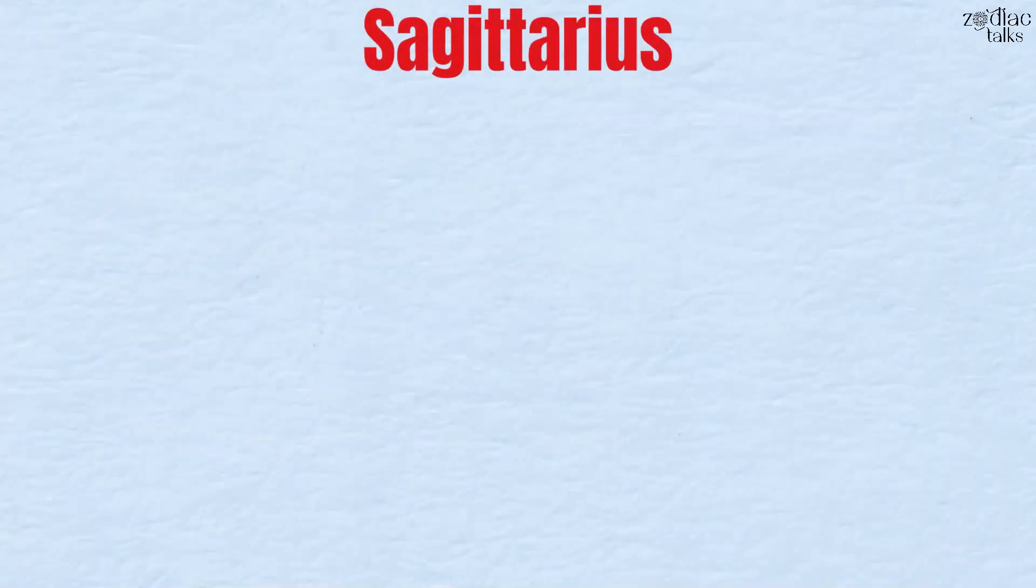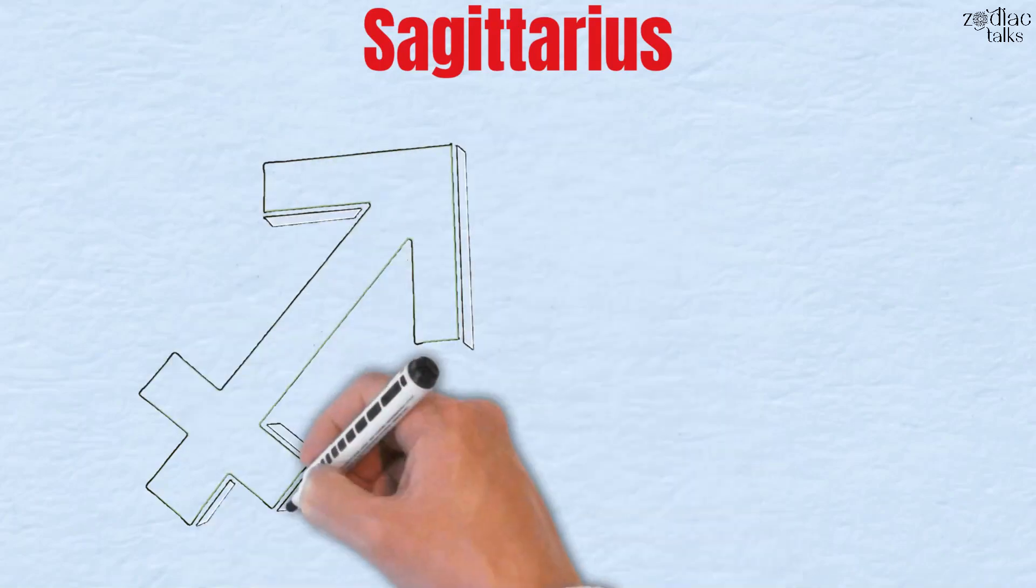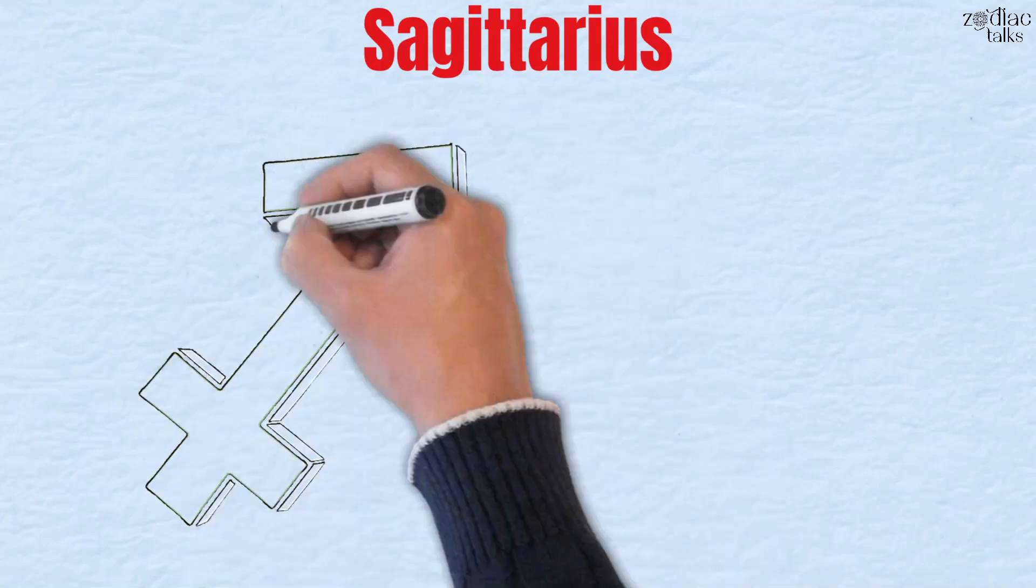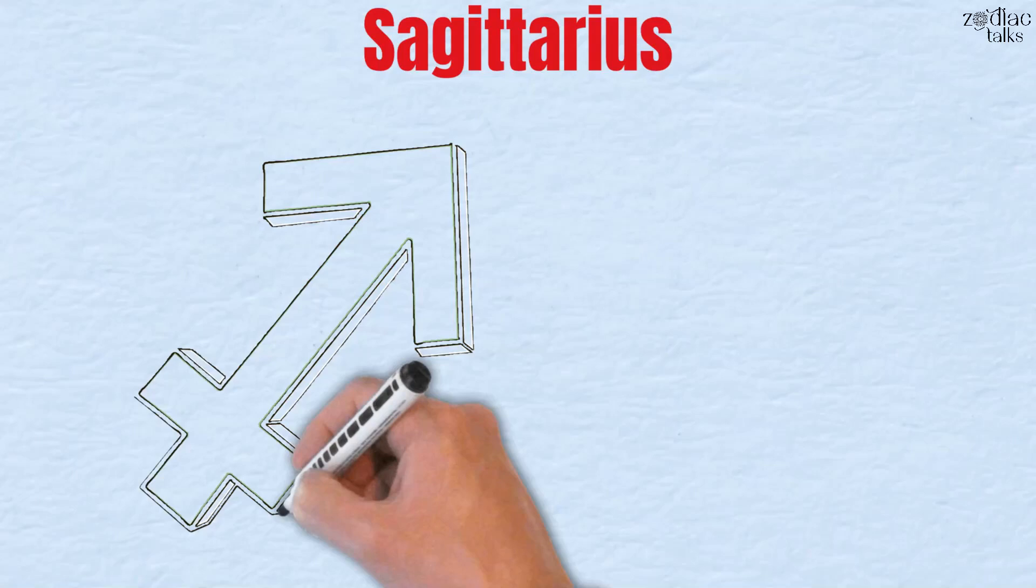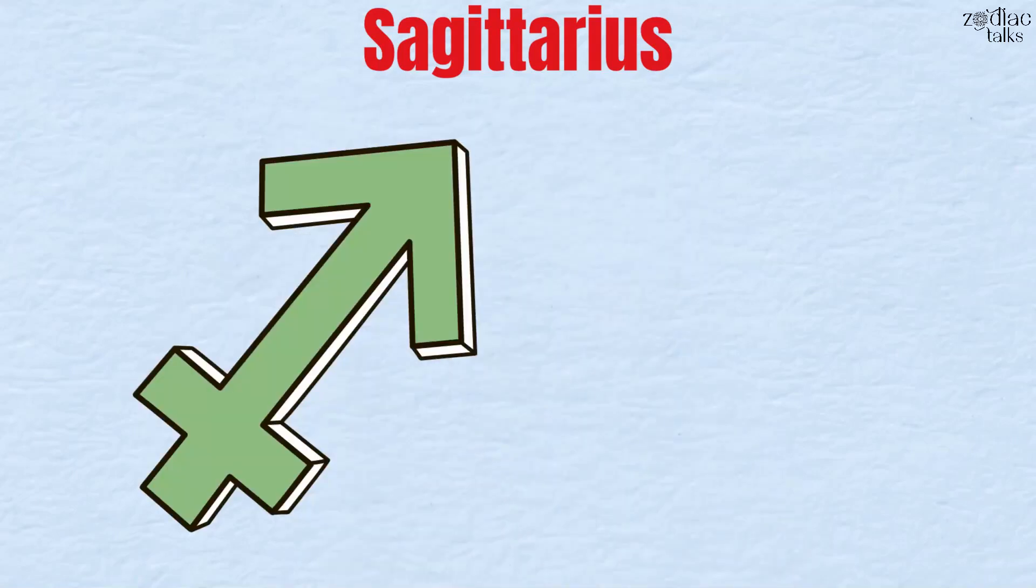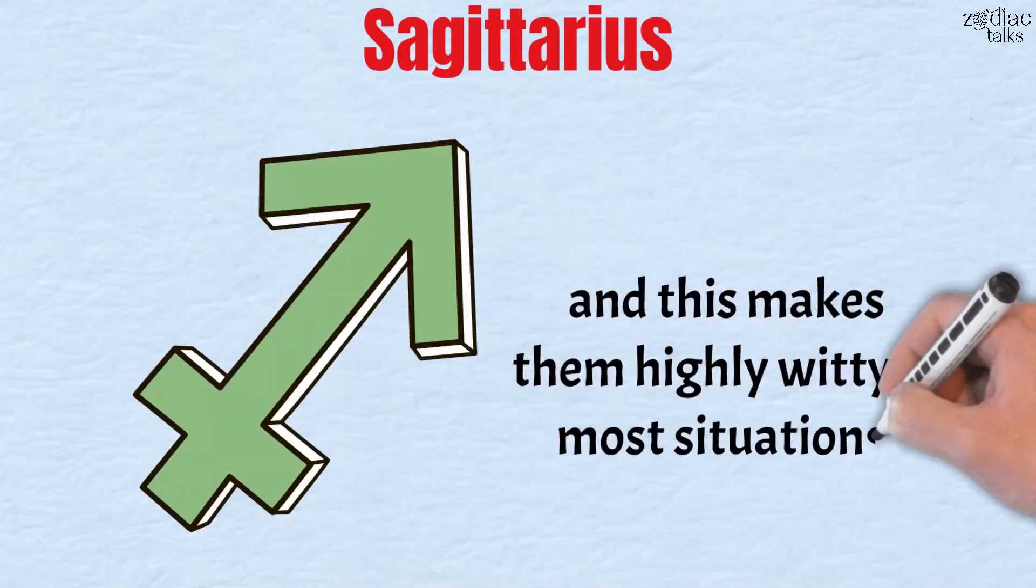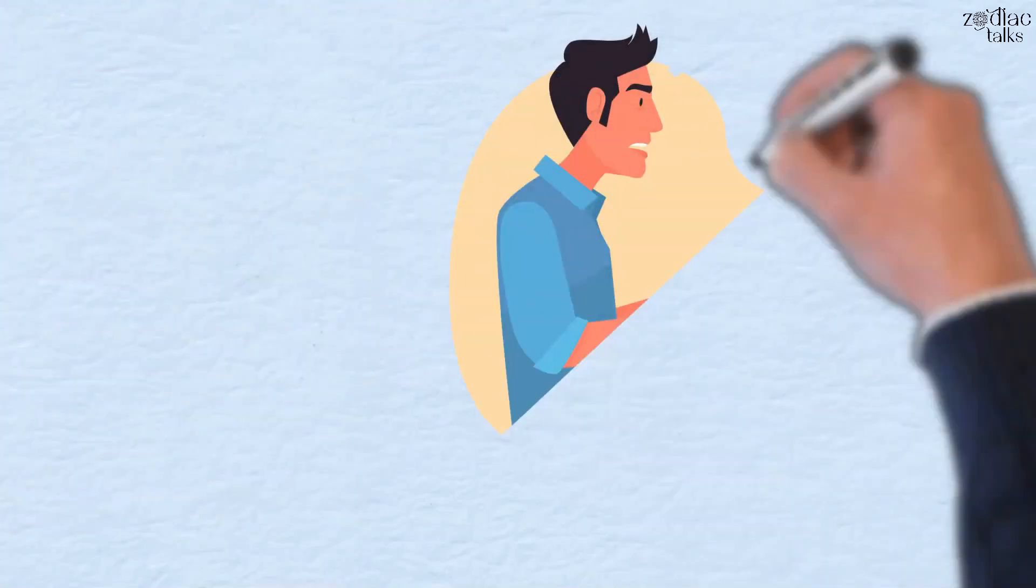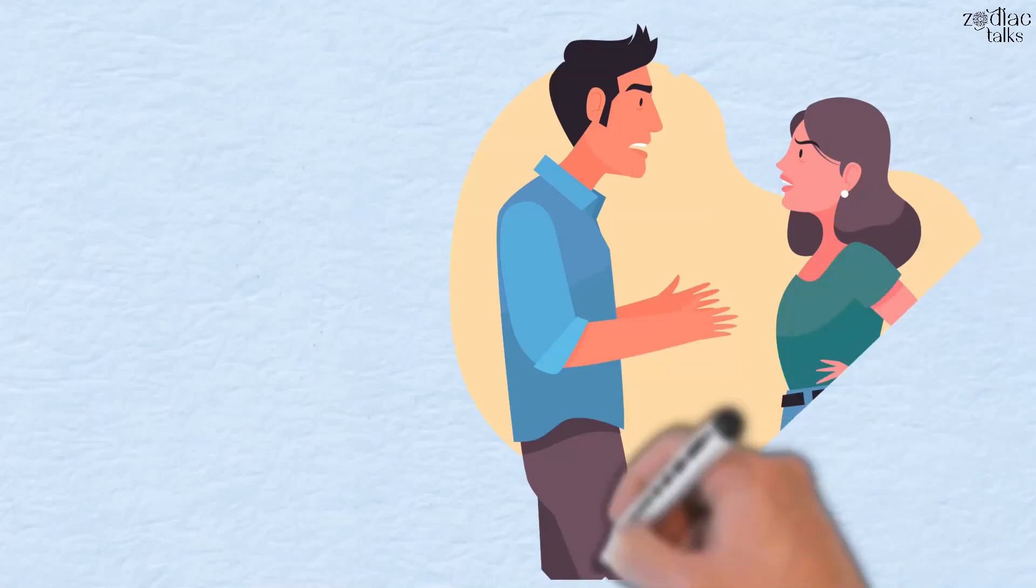Number three, Sagittarius. Another one of the dry humor signs, the Sagittarius native says things the way they are. They're not people to beat around the bush, and this makes them highly witty in most situations. These natives would often speak their minds when someone asks them something, and they're not afraid of offending people.